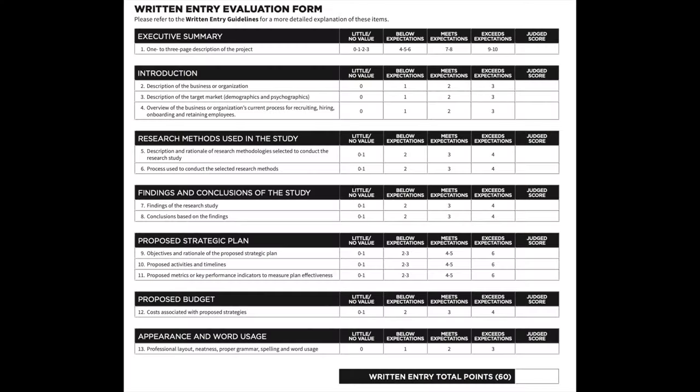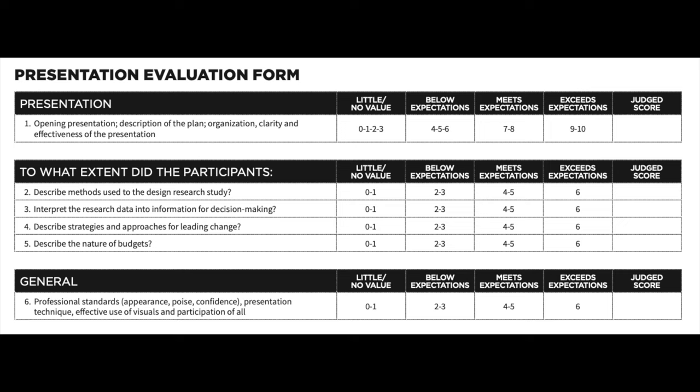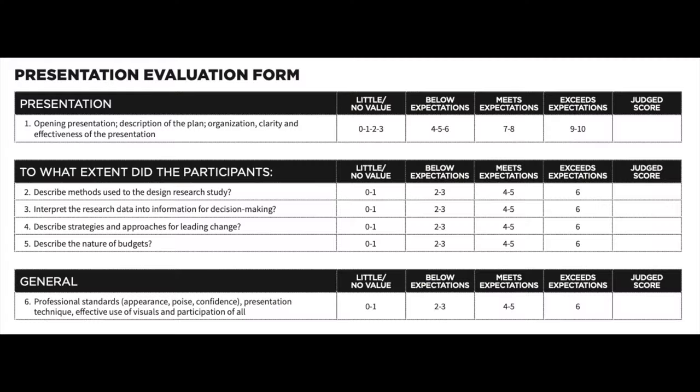The operations research written events have a rubric specific for the written paper and a rubric specific for the presentation. The written paper rubric has 13 different categories which you can be judged on for your paper. The presentation portion of the rubric has six overall things that the judge is looking for. It's really important that you don't just repeat your paper to the judge, but you focus on those six specific items. The first and the last are performance elements — how well you perform, how professional you are during that presentation. The middle four are really important, and if you focus on those and design your presentation around those, you will do very well. Those that just present their paper are not going to do as well as you will.